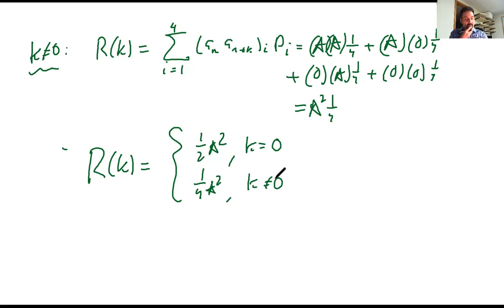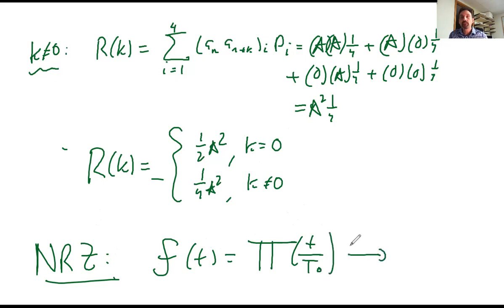All right. So now, let's switch gears. This is non-returned to zero. So what does our pulse shape look like? Our base pulse shape? It's a rectangular pulse. By the way, the Fourier transform of that, F of f, is going to be equal to T_B sinc(pi f T_B) over pi f T_B. Great.